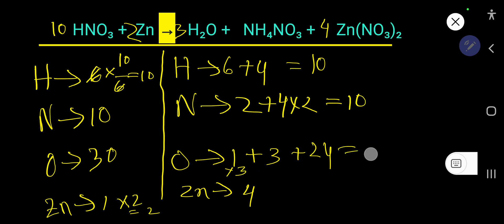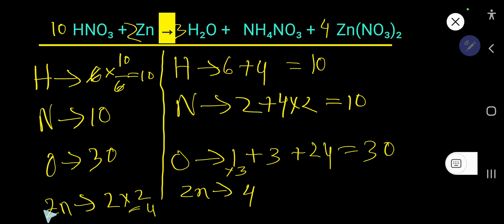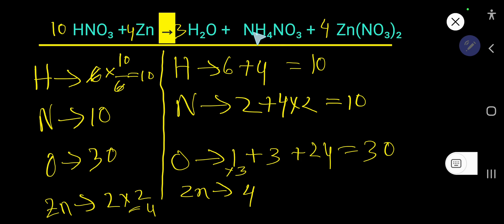Everything is balanced except zinc: zinc is 2 on the right but 4 on the left. Multiply Zn by 2 — place coefficient 4 in front of Zn: 2 times 2 = 4. Final check: 4 zinc, 4 zinc; 30 oxygen, 30 oxygen; 10 nitrogen, 10 nitrogen, 10 nitrogen — all balanced. This is the balanced equation. The key trick is not to touch NH₄NO₃ when balancing, because nitrogen in that compound appears in two polyatomic ions.